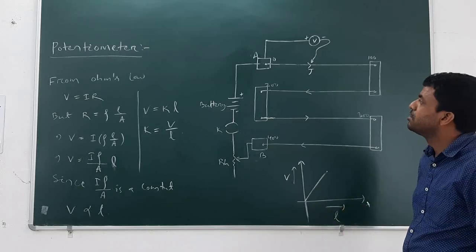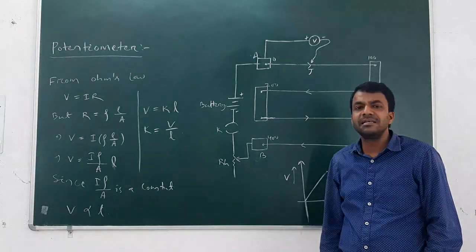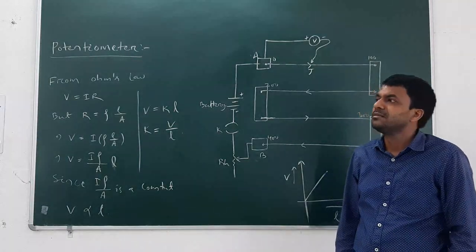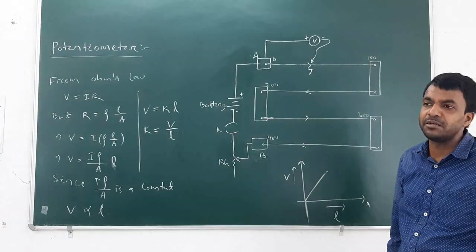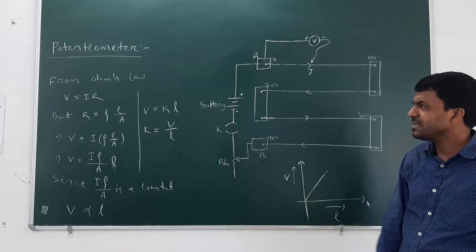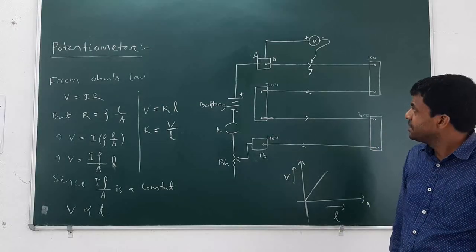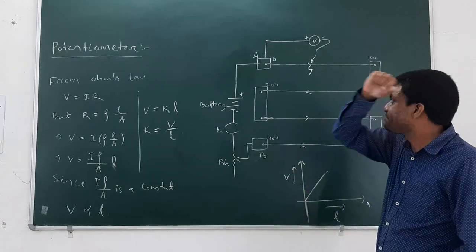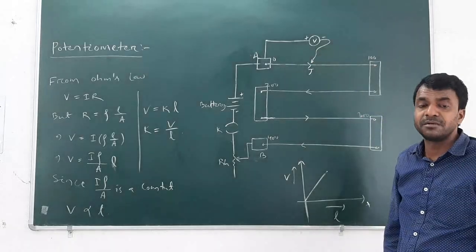Now, what is the principle of the potentiometer? The principle states that when a constant current is passing through a potentiometer wire having a uniform area of cross-section, then the potential difference is directly proportional to the length of the wire.